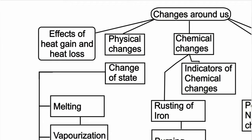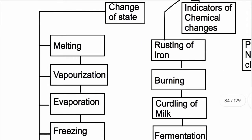We will see the effects of heat gain and heat loss. Melting — melting means, for example, an ice cream melts; that is melting. Vaporization means a substance goes from liquid state with heat applied. Solid to liquid is melting; heat causes melting. Freezing is liquid to solid, by cooling.